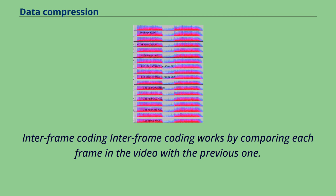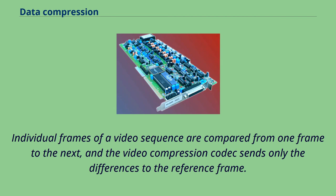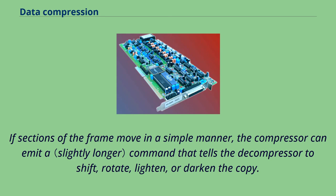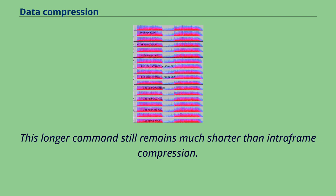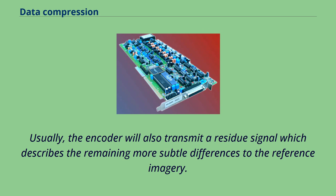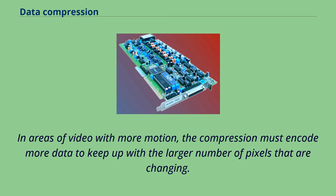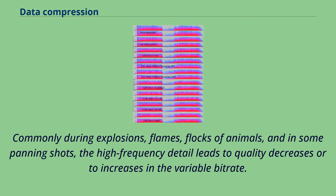Interframe coding works by comparing each frame in the video with the previous one. Individual frames of a video sequence are compared from one frame to the next, and the video compression codec sends only the differences to the reference frame. If the frame contains areas where nothing has moved, the system can simply issue a short command that copies that part of the previous frame into the next one. If sections of the frame move in a simple manner, the compressor can emit a command that tells the decompressor to shift, rotate, lighten, or darken the copy. This longer command still remains much shorter than intraframe compression. Usually, the encoder will also transmit a residue signal which describes the remaining more subtle differences to the reference imagery. Using entropy coding, these residue signals have a more compact representation than the full signal. In areas of video with more motion, the compression must encode more data to keep up with the larger number of pixels that are changing. Commonly during explosions, flames, flocks of animals, and in some panning shots, the high-frequency detail leads to quality decreases or to increases in the variable bitrate.